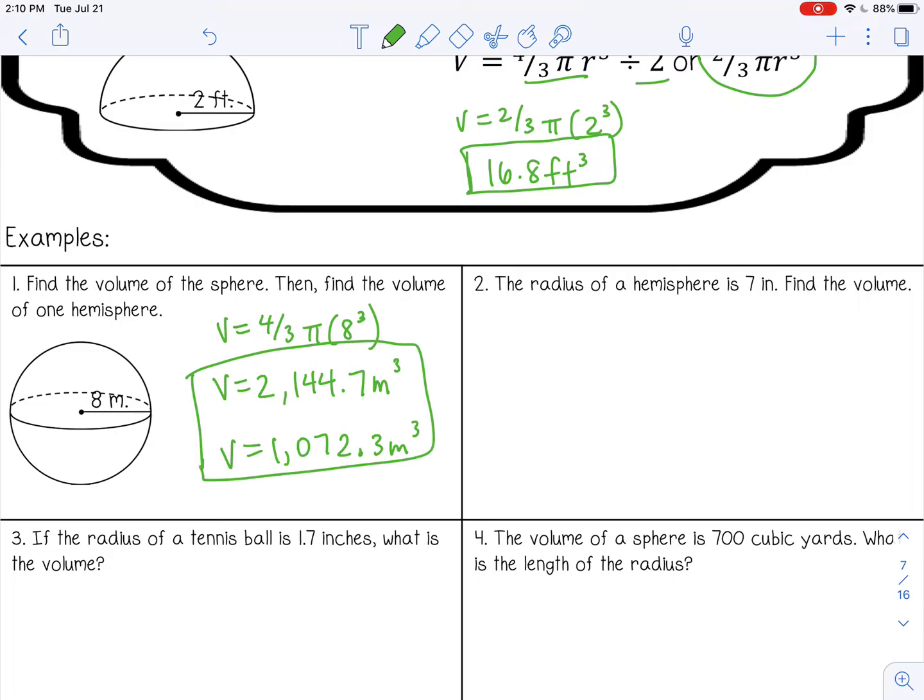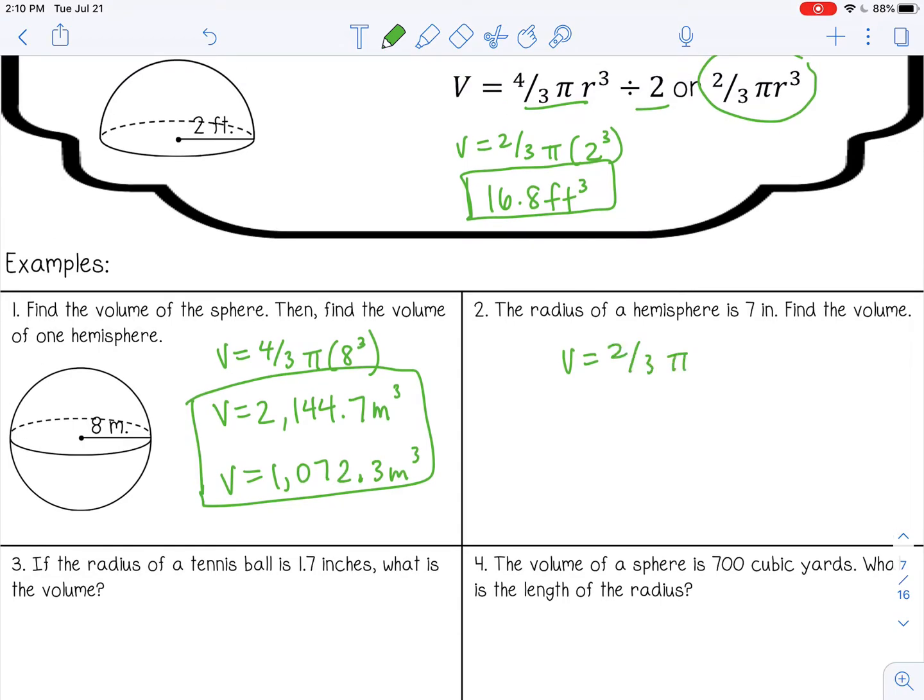Number two, the radius of a hemisphere is seven inches. Find the volume. So the formula for a hemisphere is two thirds pi r cubed. So two thirds pi seven cubed. And I got 718.4 inches cubed.